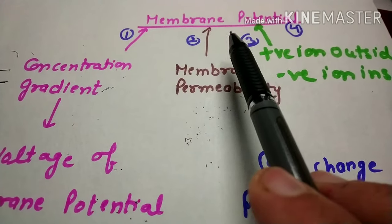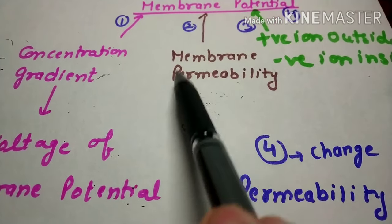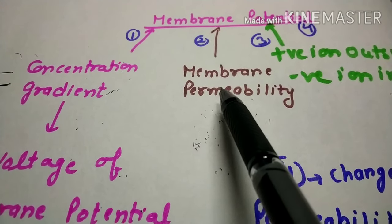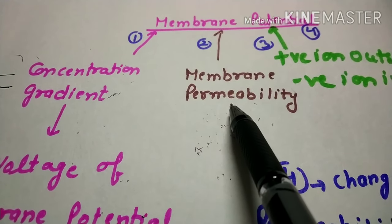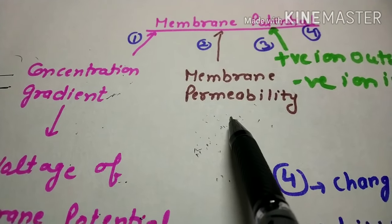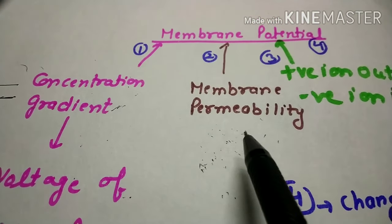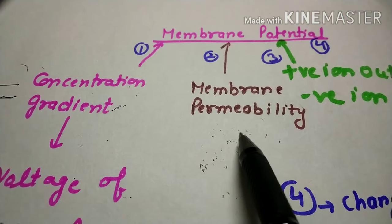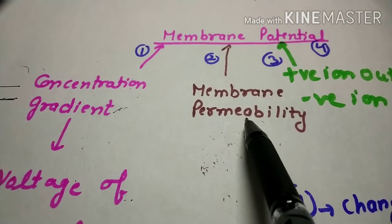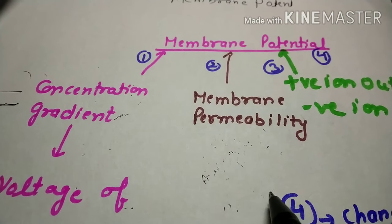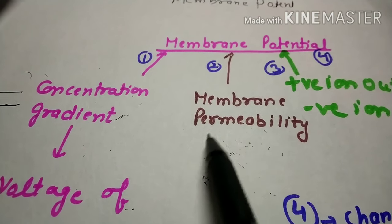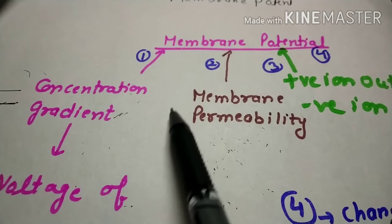The second factor which contributes to membrane potential is membrane permeability. For example, consider if potassium and chloride ions have zero permeability through the membrane at any given time. Then what would happen is the membrane would only care about sodium ions going in and out, and the outside would be only permeable for the sodium ion.